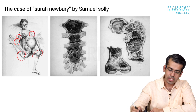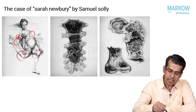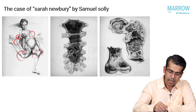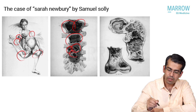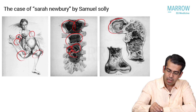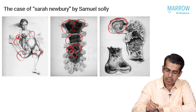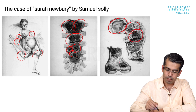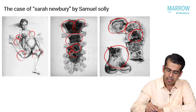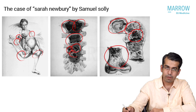At autopsy, the sternum shows multiple lytic areas which are like punched-out holes within the bones. Similarly in the femoral cavities, there are large lytic lesions in the head of the femur, the neck of the femur, and in the upper and lower body of the femur.